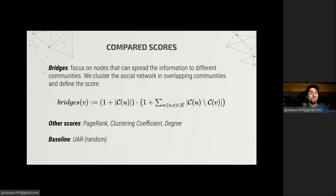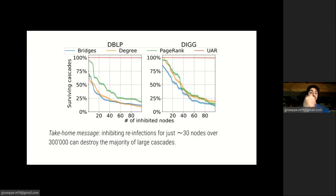So the scores we use are some well-known scores like PageRank, Clustering Coefficient, and Degree. We also use the Random Score Baseline. And we use a new score, Bridges, which measures how much a node is a bridge between communities, so how much it's able to spread the infection to other communities.